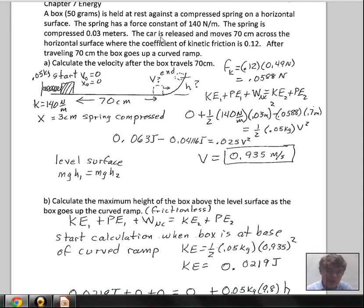So the box is released from rest. The box moves 70 centimeters along this horizontal surface, and the coefficient of kinetic friction here is 0.12. I won't even bother putting the static coefficient there, because the box is in motion, we're going to use kinetic friction. The box travels 70 centimeters, at which point in this idealized problem friction is zero and it goes up the ramp.